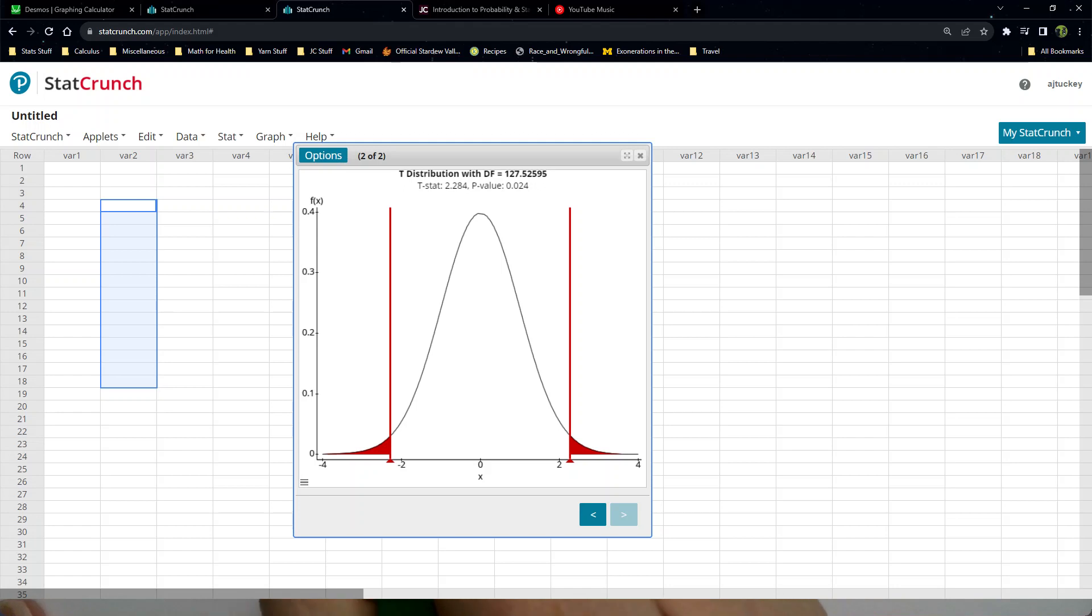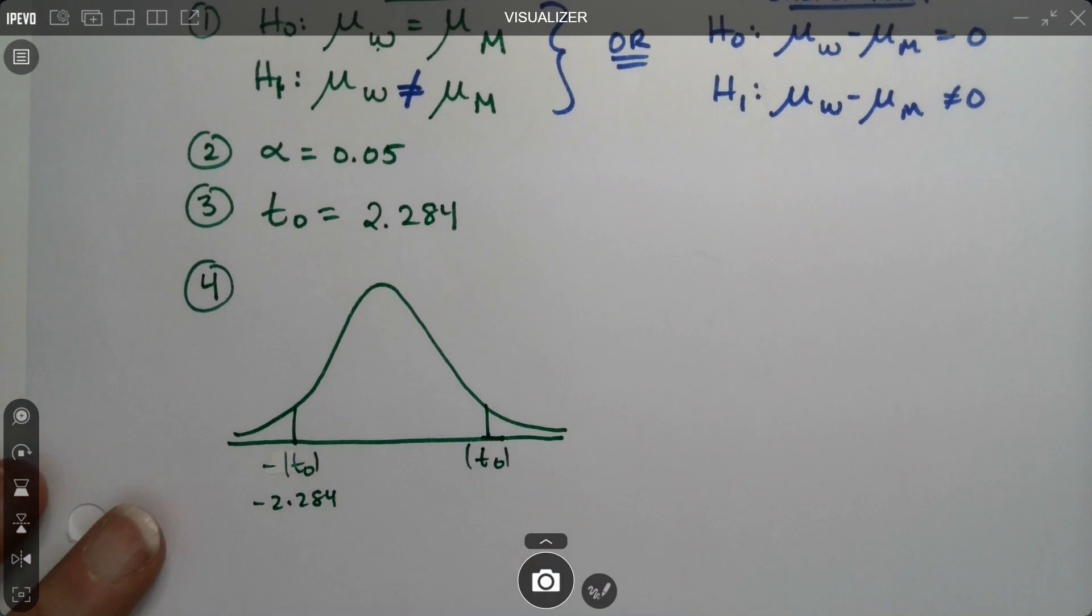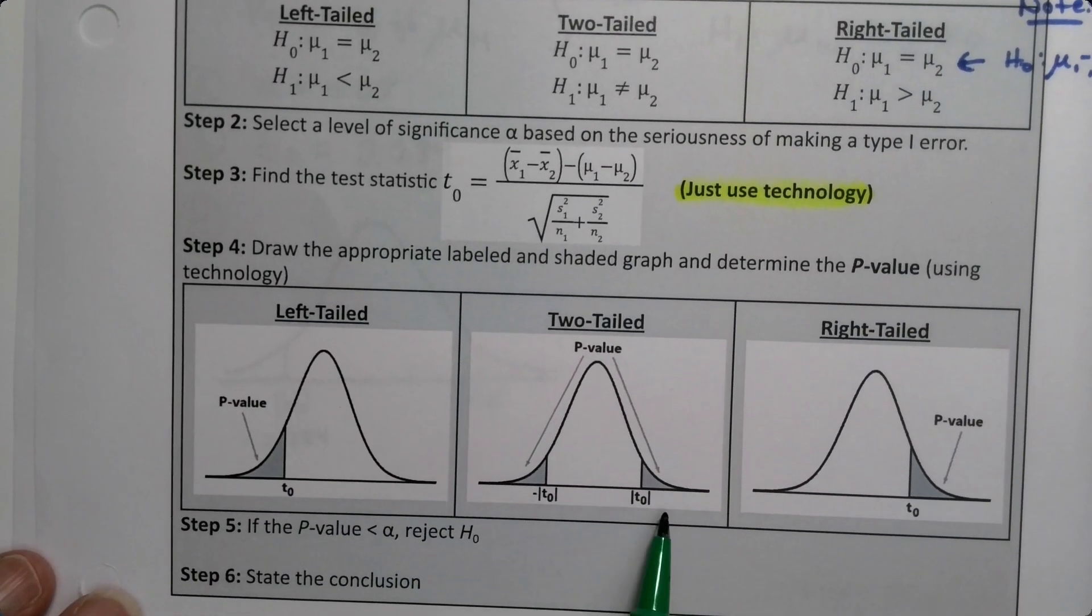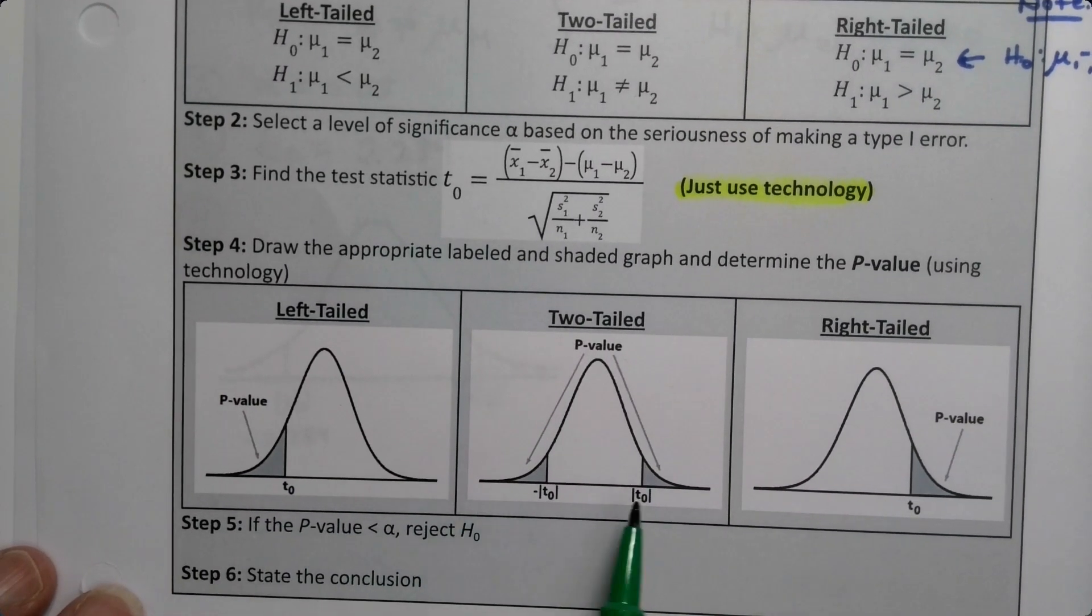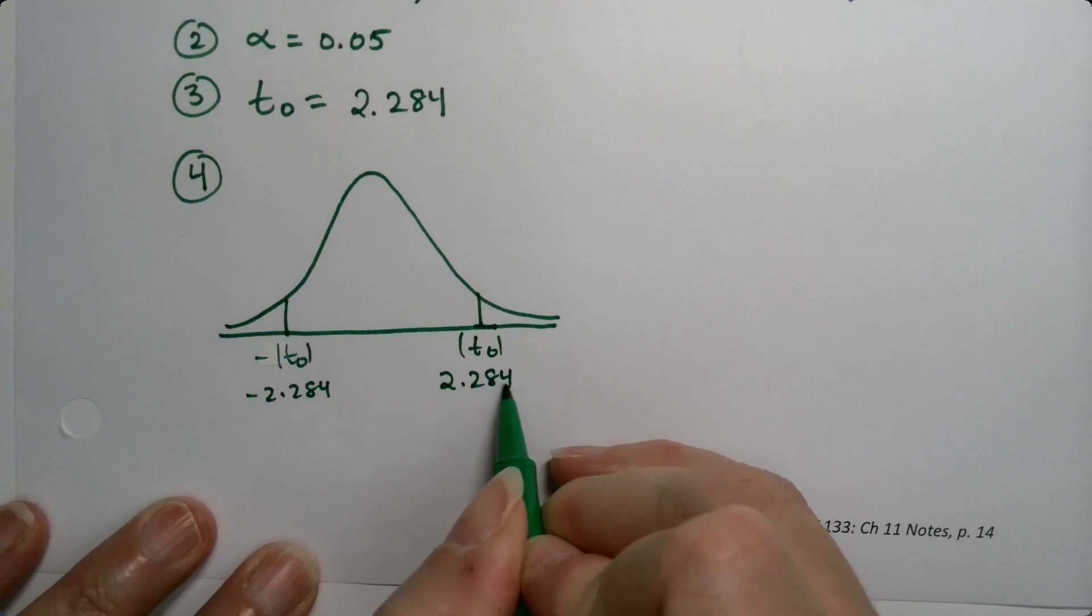We're going to draw our normal curve and label the picture that we see. So there's negative t0, technically it's the absolute value of t0, which is negative 2.284, and then the same spot on the other side, positive t0. Technically it's absolute values; you don't have to put the absolute value symbols, but they're technically more correct to do so. You can see that on the two-tailed test they're there when they're not there for the other ones because the other ones are obvious. Then we shade these tails.